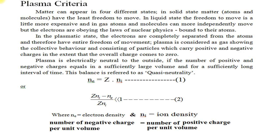First of all, we will talk about plasma criteria. As we know that matter can appear in four different states. In solid state, atoms and molecules have the least freedom to move. In liquid state, the freedom to move is a little more, and in gas, atoms and molecules can move more independently, but the electrons are bound to their atoms, obeying the laws of nuclear physics.